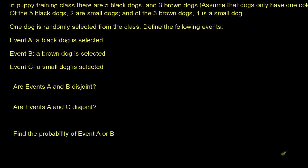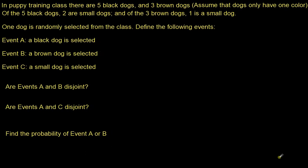In a puppy training class there are five black dogs and three brown dogs. Assume dogs only have one color. Of the five black dogs, two are small; of the three brown dogs, one is small. One dog is randomly selected. Event A: the dog is black. Event B: the dog is brown. Event C: the dog is small. Are A and B disjoint? Yes — dogs can only have one color, so a dog cannot be both black and brown.